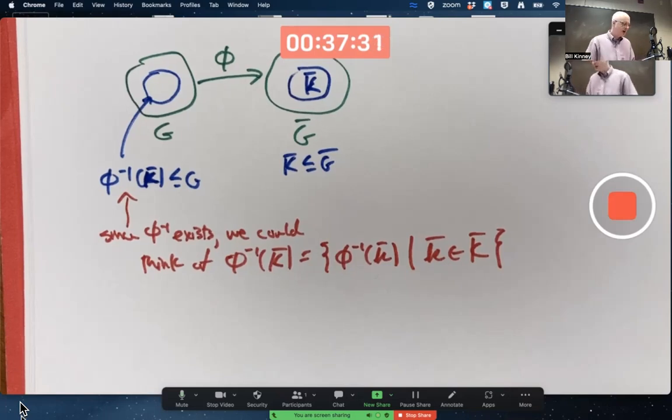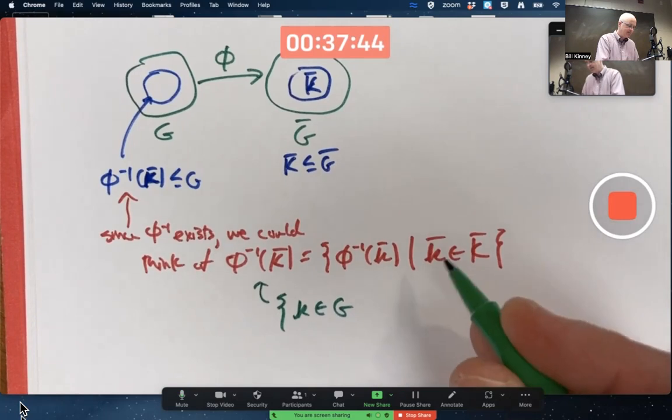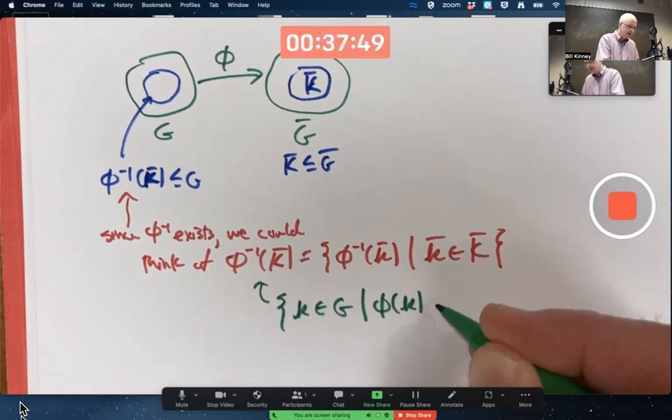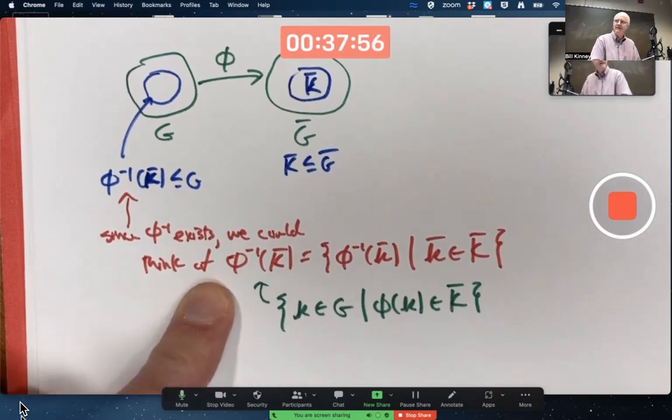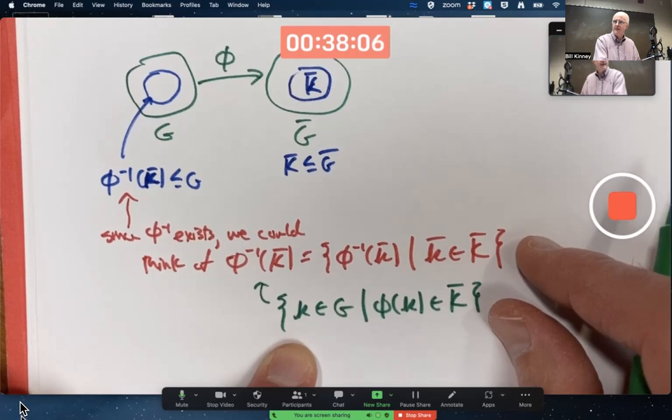Instead, they describe it as the set of all elements of G that get mapped into K-bar. They don't use the inverse function notation here in describing this set, φ inverse of K-bar. They don't use the inverse function there. When the inverse functions exist, these are equivalent. They mean the same thing.